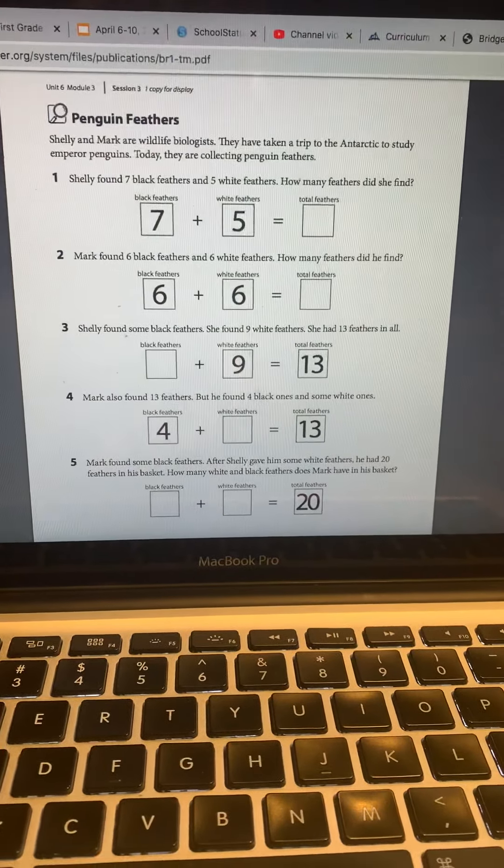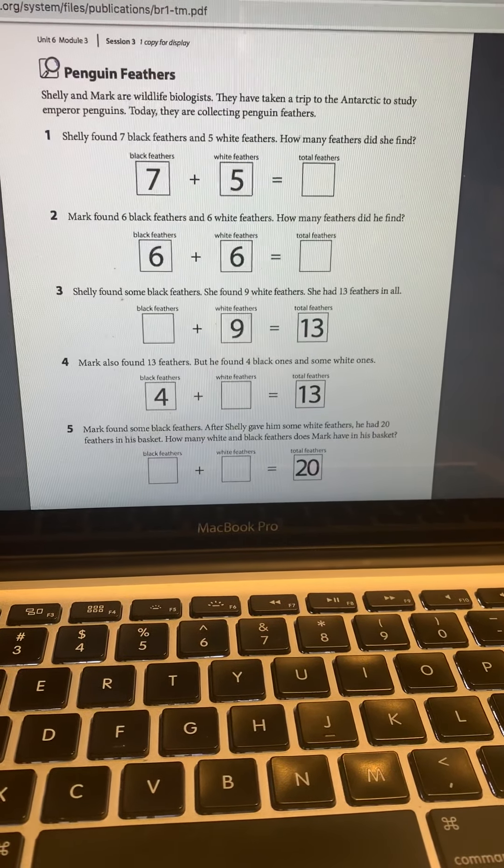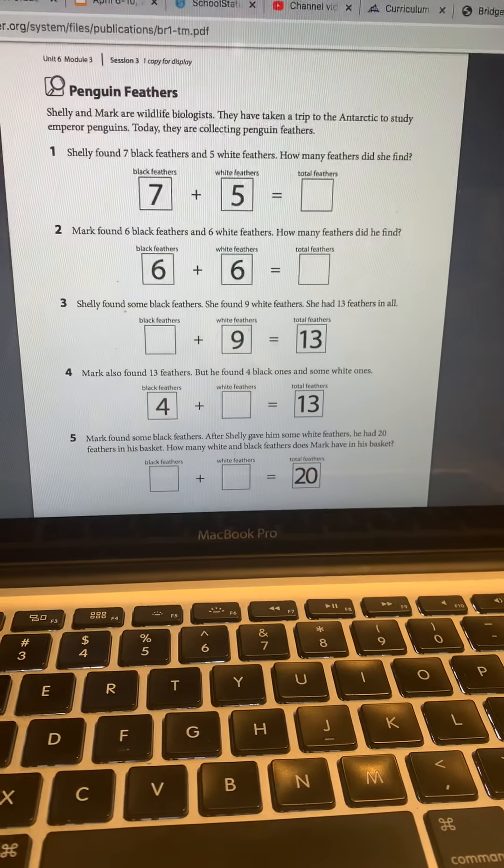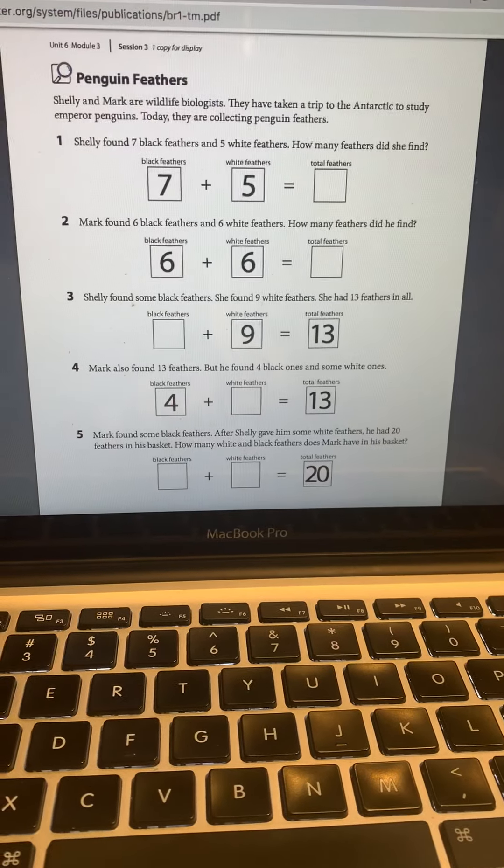Number one, Shelly found seven black feathers and five white feathers. How many feathers did she find? You're going to add seven plus five. You can do this with your fingers or you can get a piece of paper or manipulatives. Ms. Horton's favorite at home manipulative is a penny.